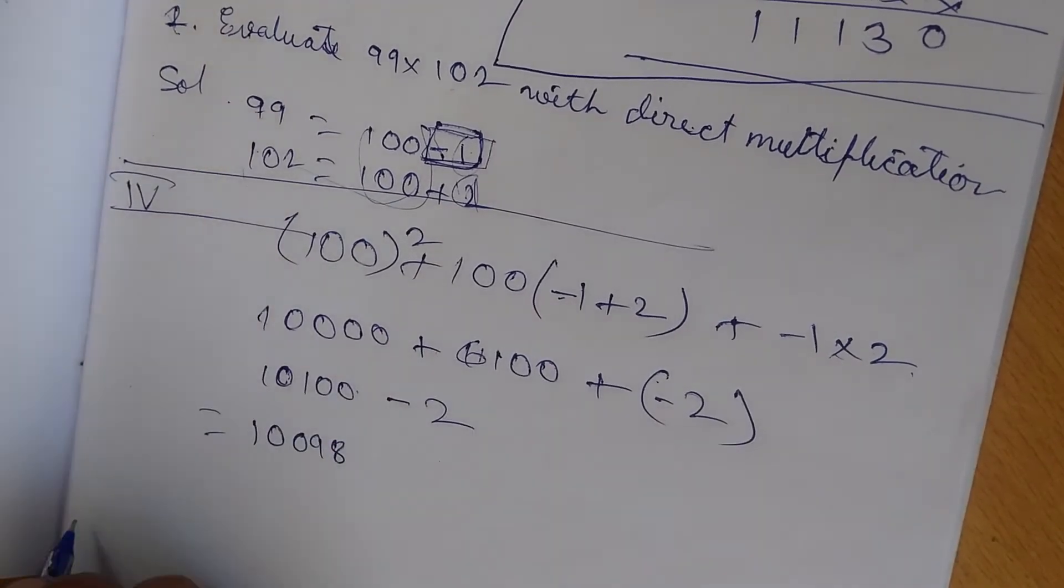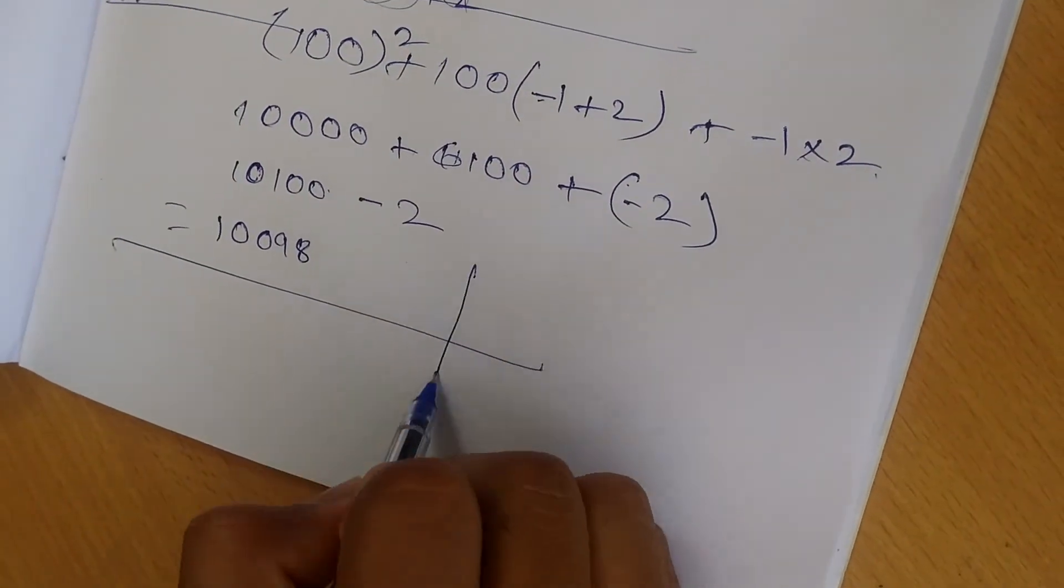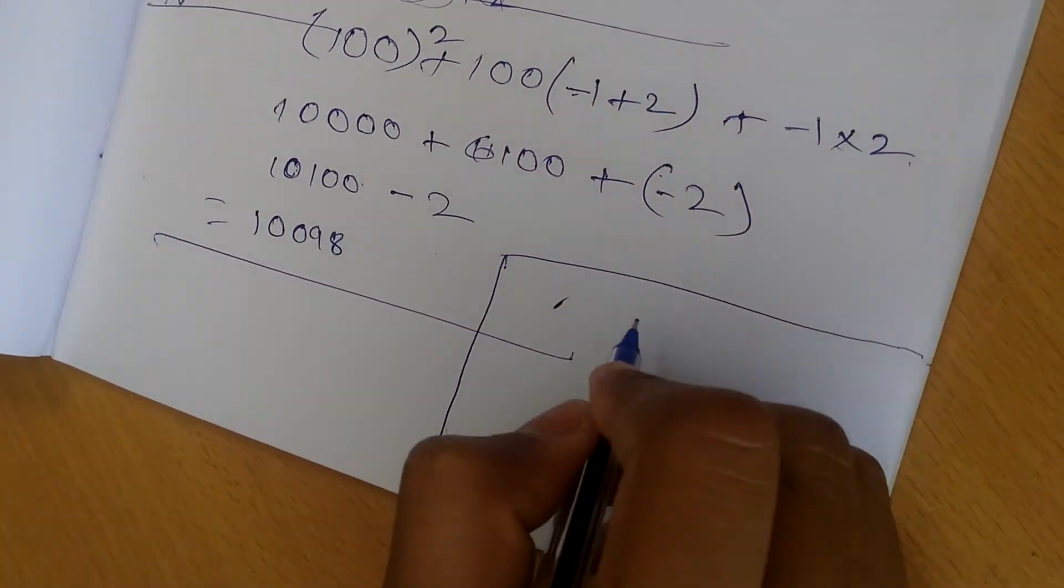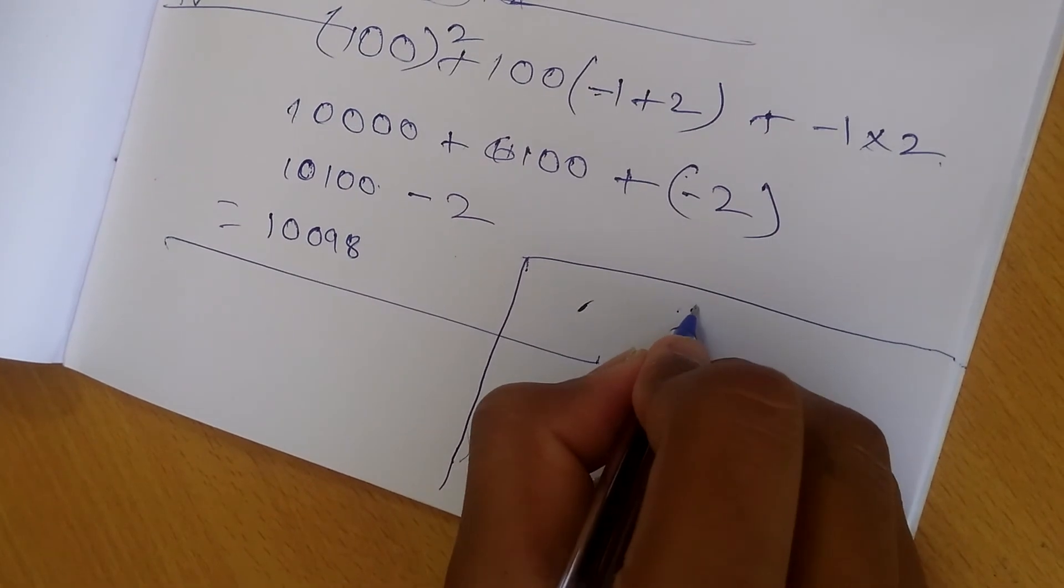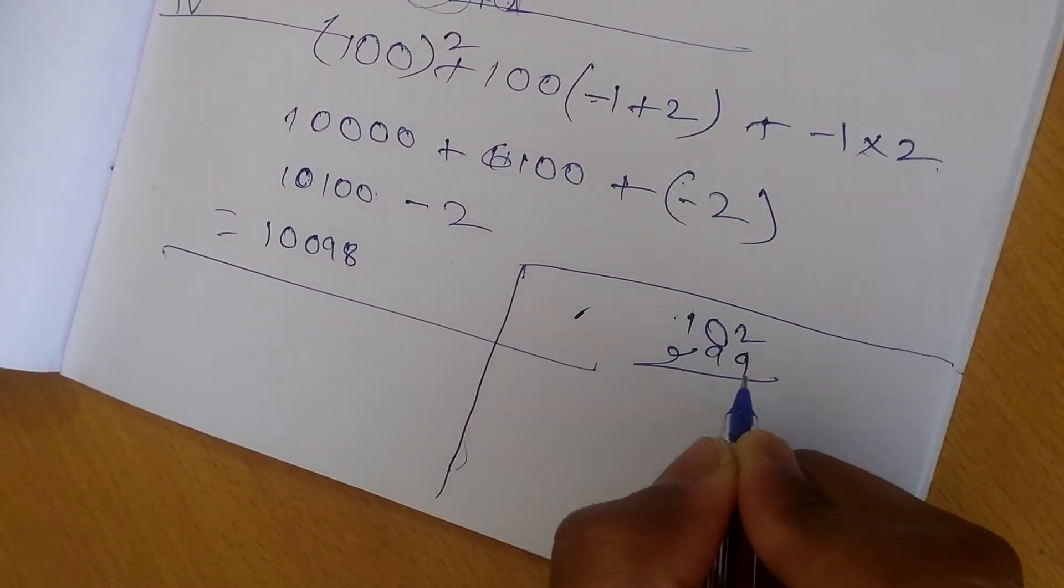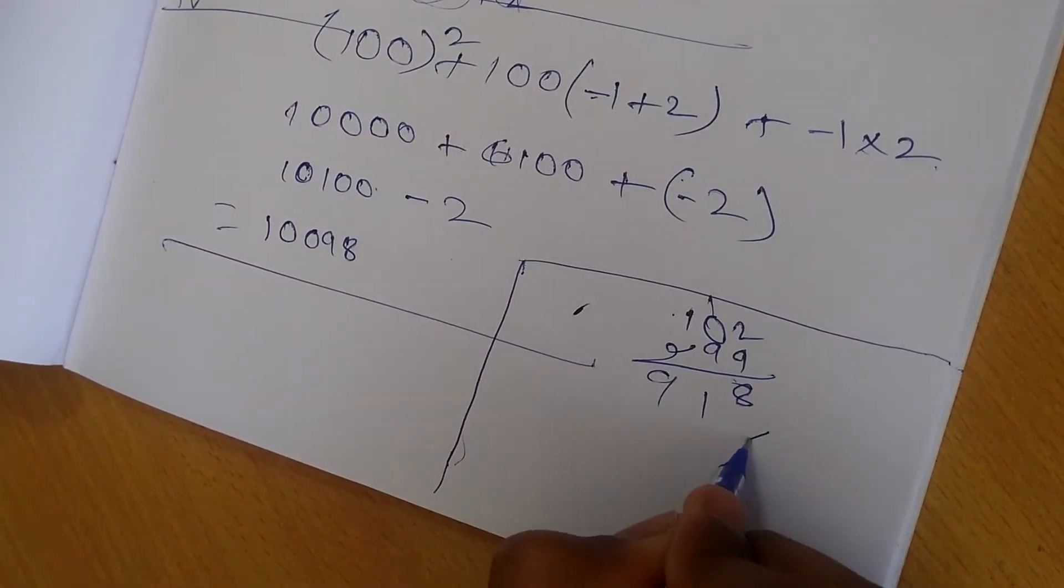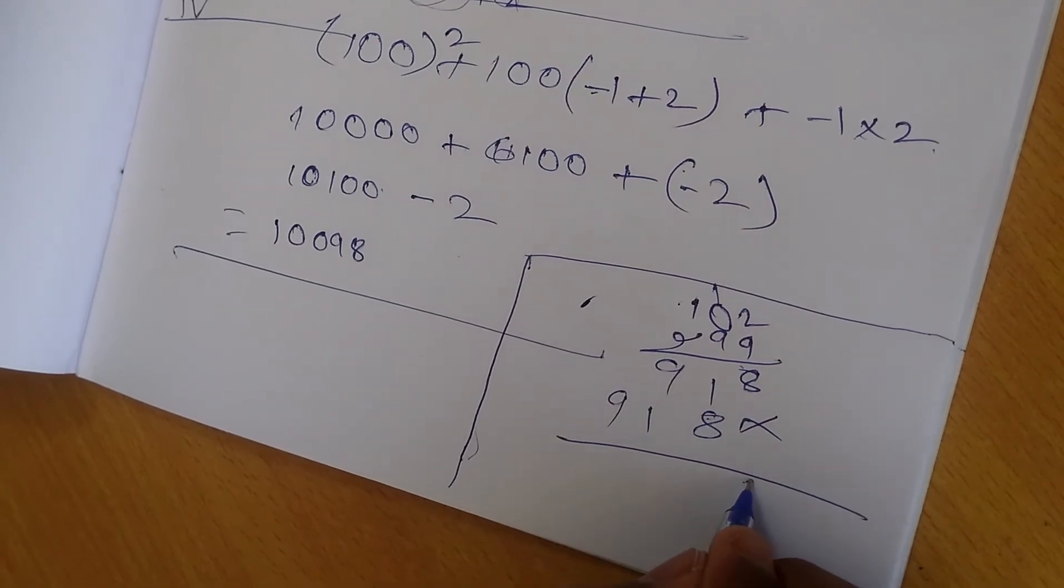Again I am confirming you that it is always correct. So again I am taking: what is this? It is 102 times 99: 918, 918, so 10098. What is the answer? Same. So this is again verified that it is correct.